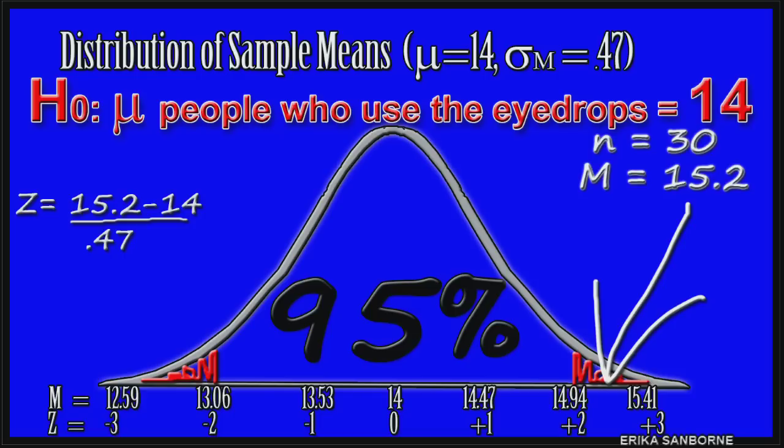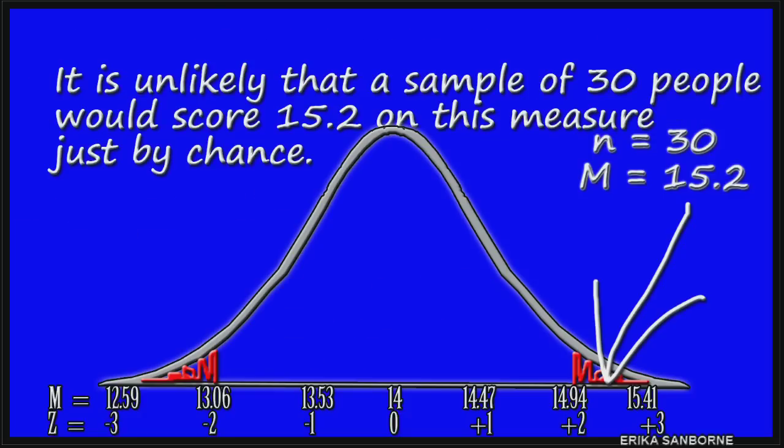And remember how normal distributions work, with probabilities and percents and proportions, those p words. Our eyedrop people's sample score is here. It's unlikely that a sample of 30 people would score 15.2 on this just by chance. p is less than .05.